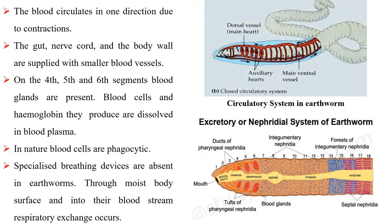The gut, nerve cord and the body wall are supplied with smaller blood vessels. On the 4th, 5th and 6th segments, blood glands are present. Blood cells and hemoglobin they produce are dissolved in blood plasma. In nature, blood cells are phagocytic.